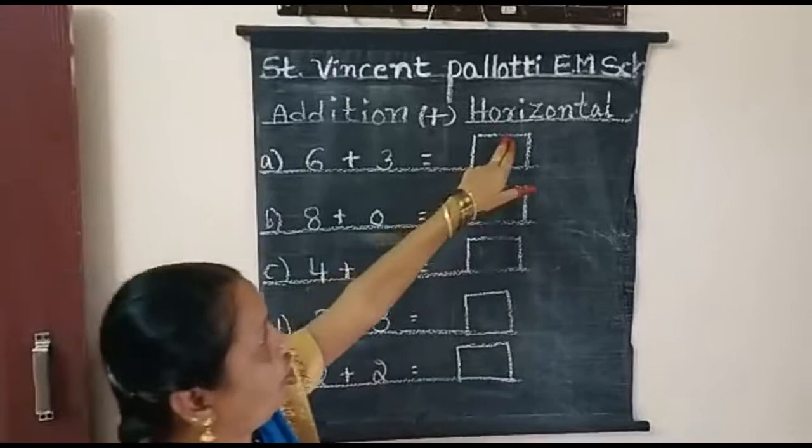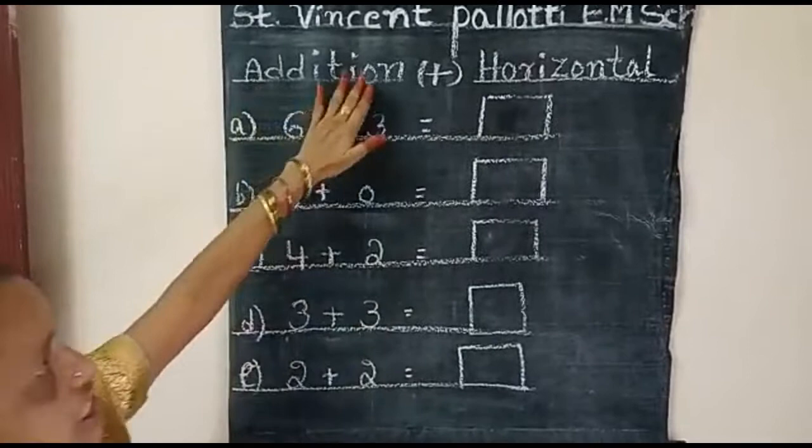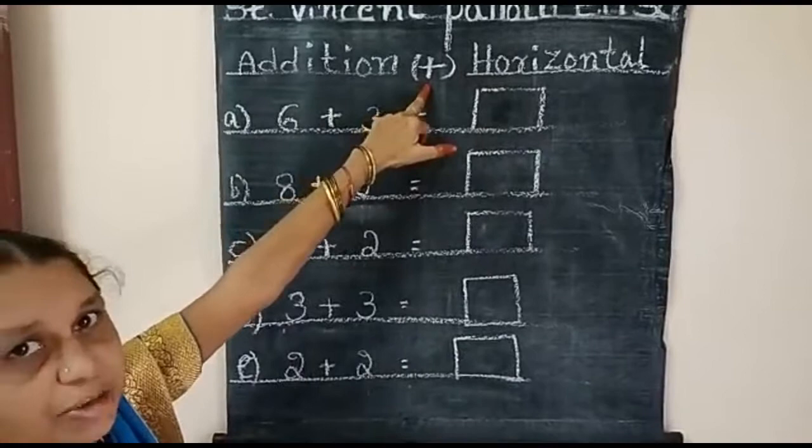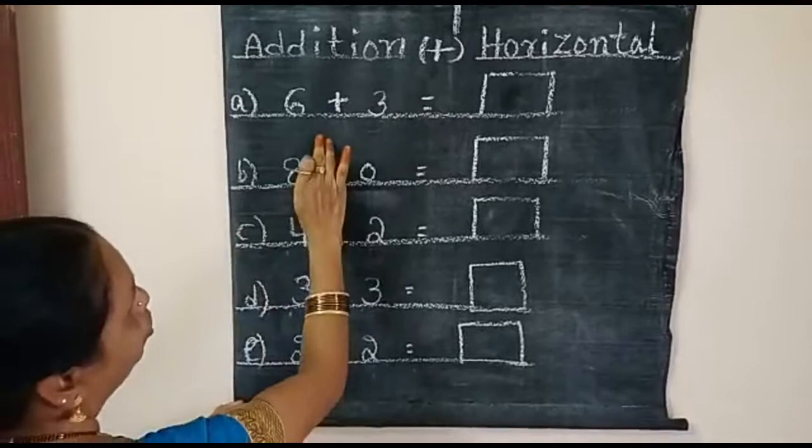One, horizontal additions. Number two, vertical addition. Today I will teach horizontal additions. Addition symbol is flat. You are giving some sums. Look at here how to do.